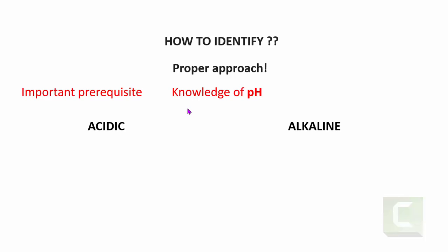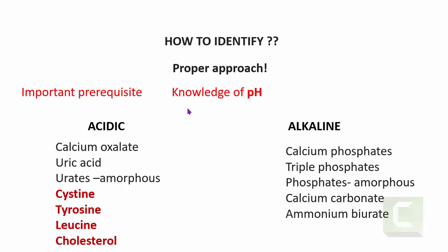The crystals found in acidic urine include calcium oxalate, uric acid, amorphous urates, cysteine, tyrosine, leucine, and cholesterol. The crystals found in alkaline urine include phosphates, calcium carbonate, and ammonium biurate. The ones marked in red — cysteine, tyrosine, leucine, and cholesterol — are never seen in normal urine; their presence is always pathological. The remaining crystals can be seen in normal urine, and it is the number and amount that determines whether it is pathological.